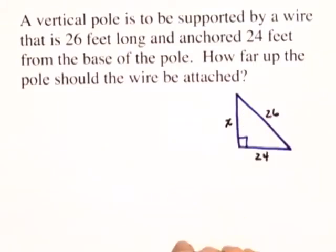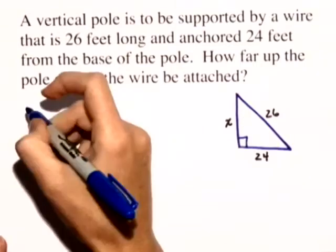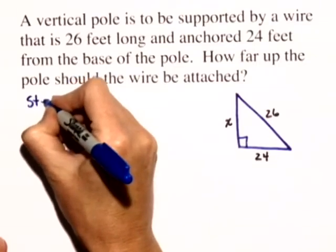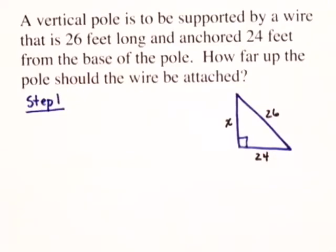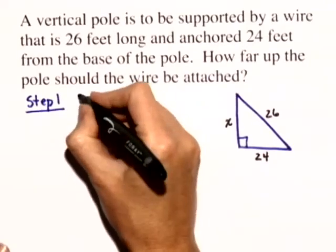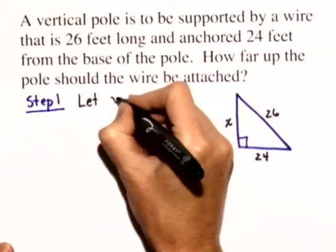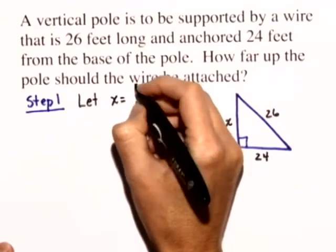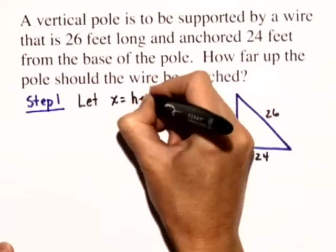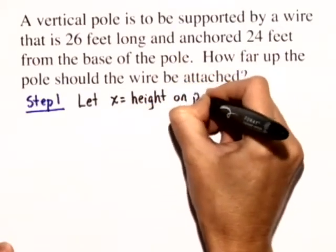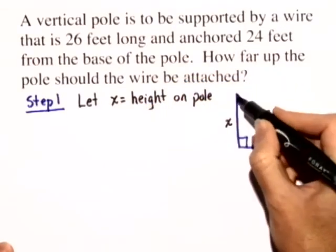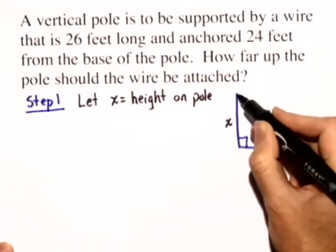We're going to do some steps here starting with step 1 where we're going to identify any unknown quantities. So X is our unknown quantity and we'll let X equal the height on the pole at which we should attach this wire.